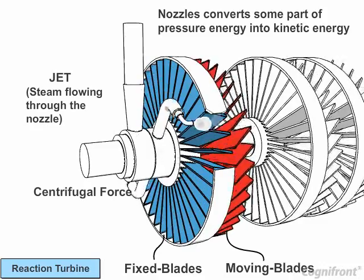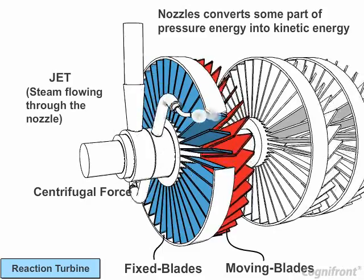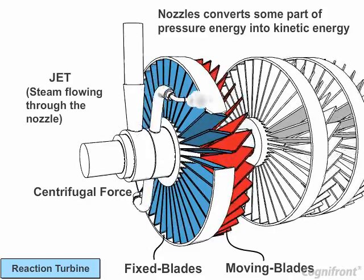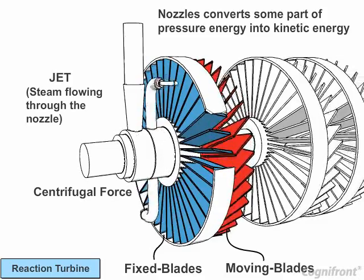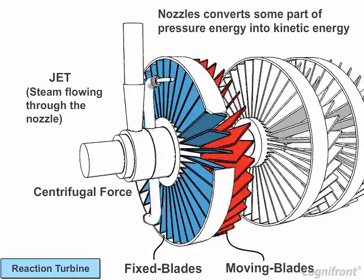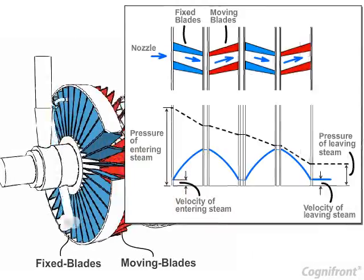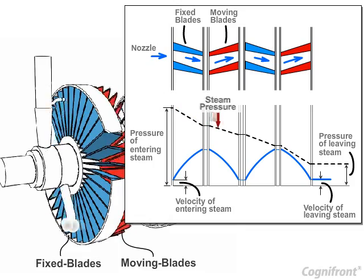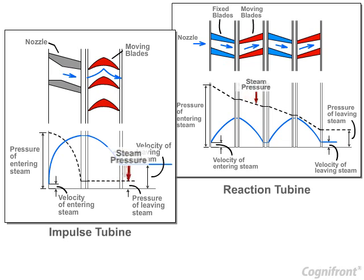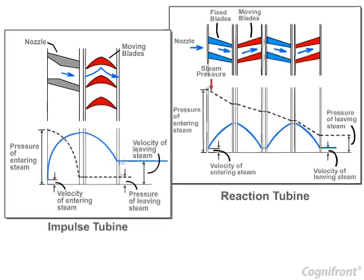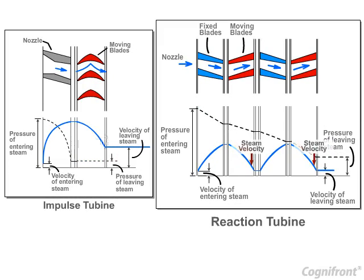The steam molecules exert force on the blades, and this causes the turbine runner and shaft to rotate. This shaft is also connected with the generator, therefore the generator rotates and electricity is produced. In a reaction turbine, the steam expansion occurs continuously while passing through the blades, thus the steam pressure falls gradually. Whereas in an impulse turbine, pressure of the steam is constant while flowing through the blades. In a reaction turbine, the velocity of the steam decreases while flowing through the moving blades.